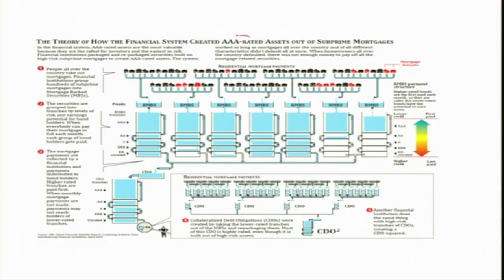Triple-A rated means low default risk — a high-quality asset — and this has been generated out of subprime mortgages. In the financial system, triple-A rated assets are the most valuable because they are the safest for investors and the easiest to sell.